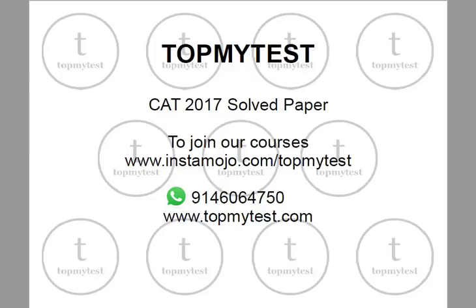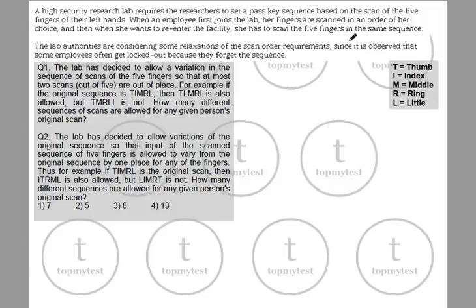Hello, we will be looking at another question from the CAT 2017 LRDI paper. Please do leave your comments and feedback on our WhatsApp number. You can also check our website for the various courses we offer. This set is basically a pretty easy set — not very difficult. You just need to be a little careful; it's more of a mathematics counting, permutation-combination sort of set. You can solve it using counting methods.